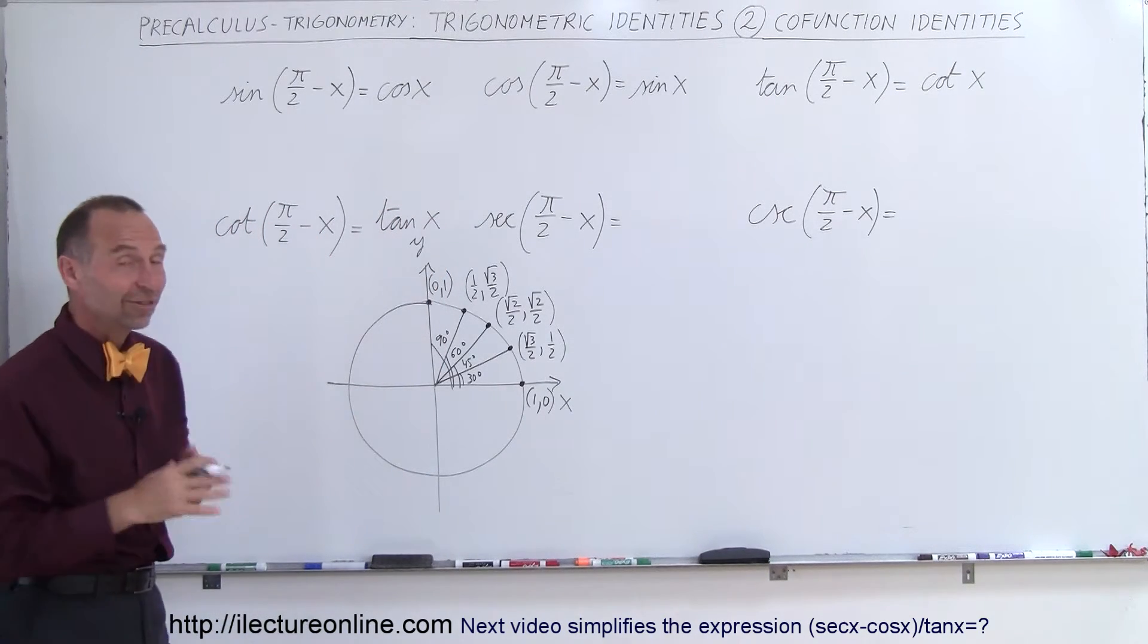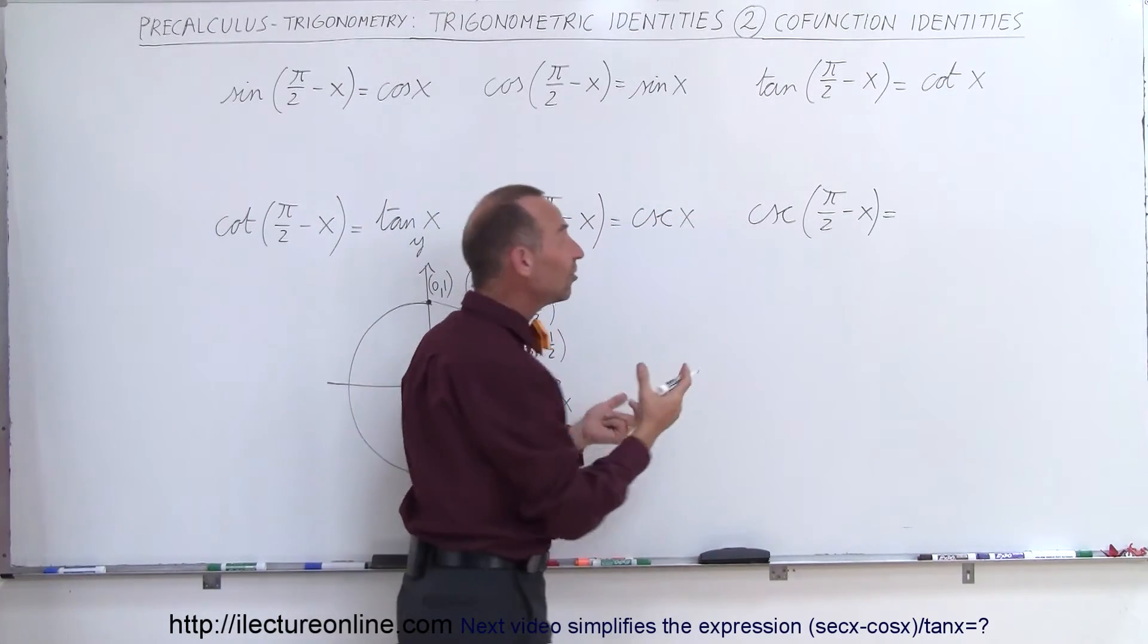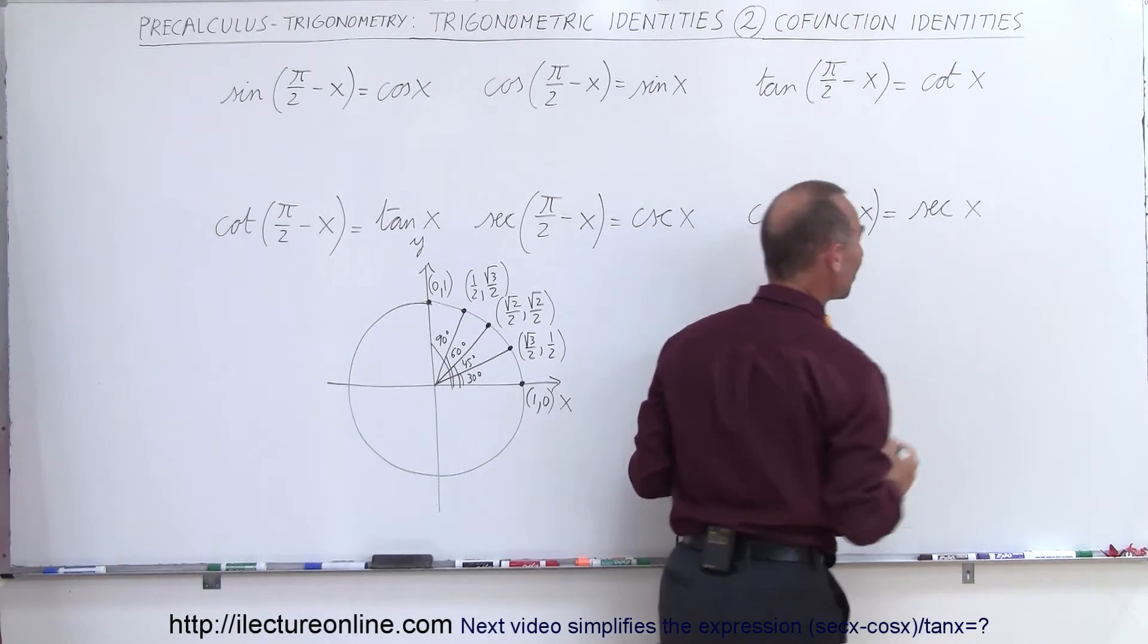And the secant of pi over 2 minus x is equal to the cosecant of x, and the cosecant of pi over 2 minus x is equal to the secant of x. So it's pretty interesting.